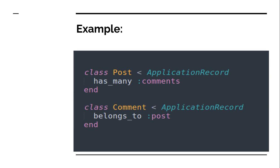We will look at the concept of primary key and foreign key in another video. For now, keep in mind that to implement a one-to-many association, you need to use has_many in the parent model and belongs_to in the child model, and the id of the parent table must be stored as a foreign key inside the child table.